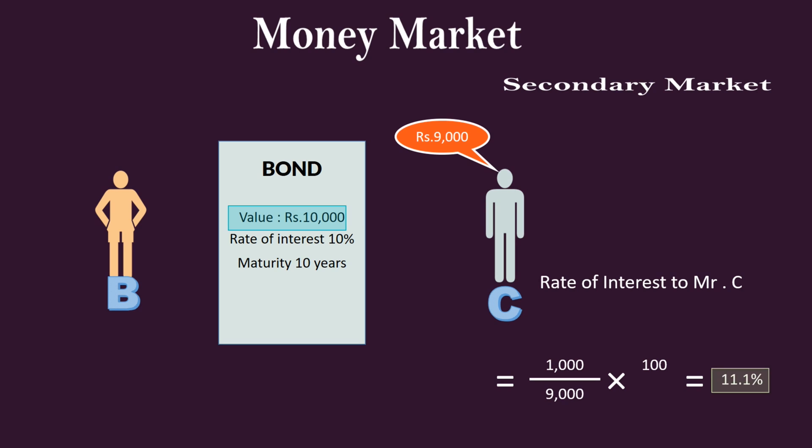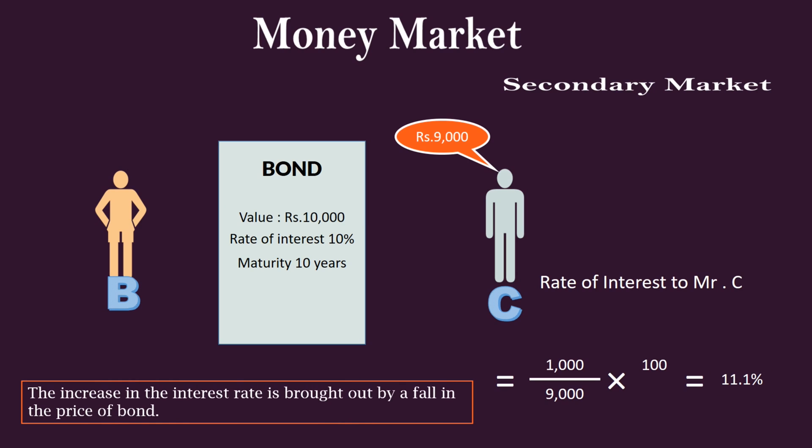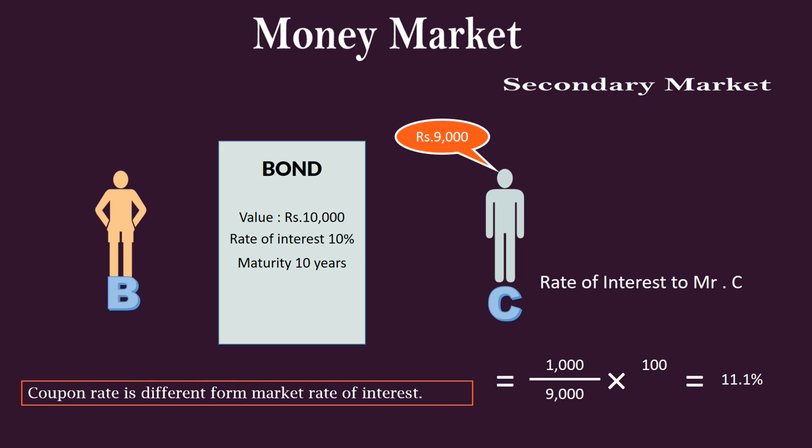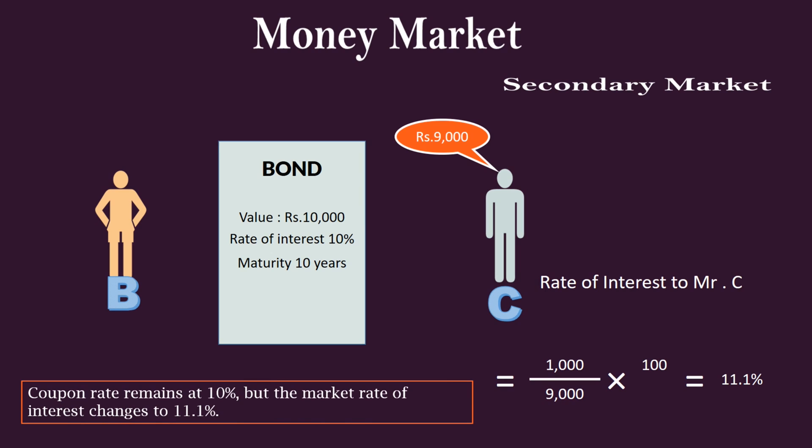Important points to note: the increase in the interest rate is brought about by a fall in the price of the bond. The coupon rate is different from the market rate of interest. The coupon rate remains at 10%, but the market rate of interest changes to 11.1%.